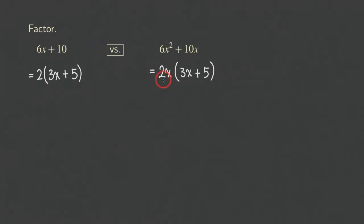The next term is the 2x times 5. 2x times positive 5 will give us positive 10x. So we know that our answer is correct, and we can check the same thing for this problem.